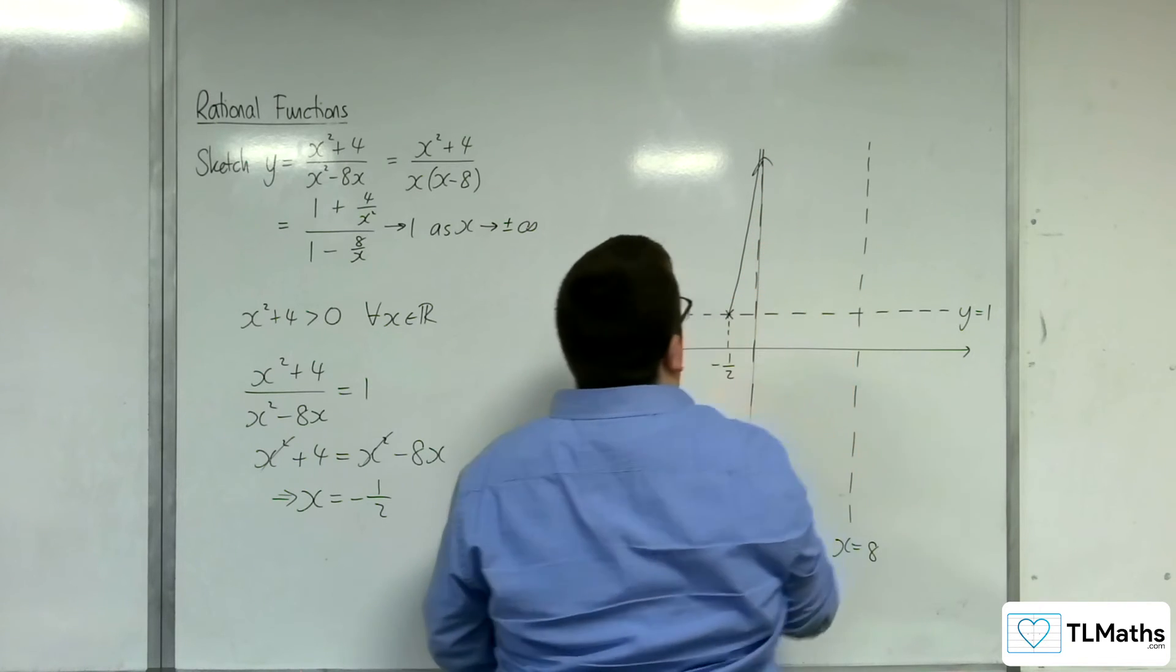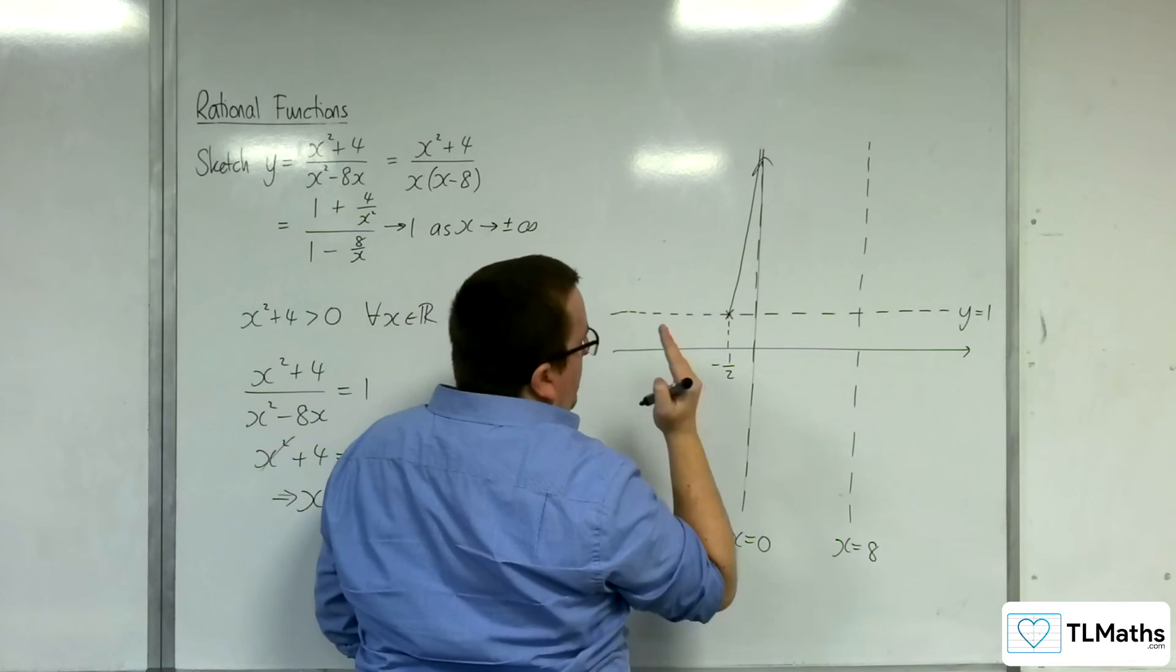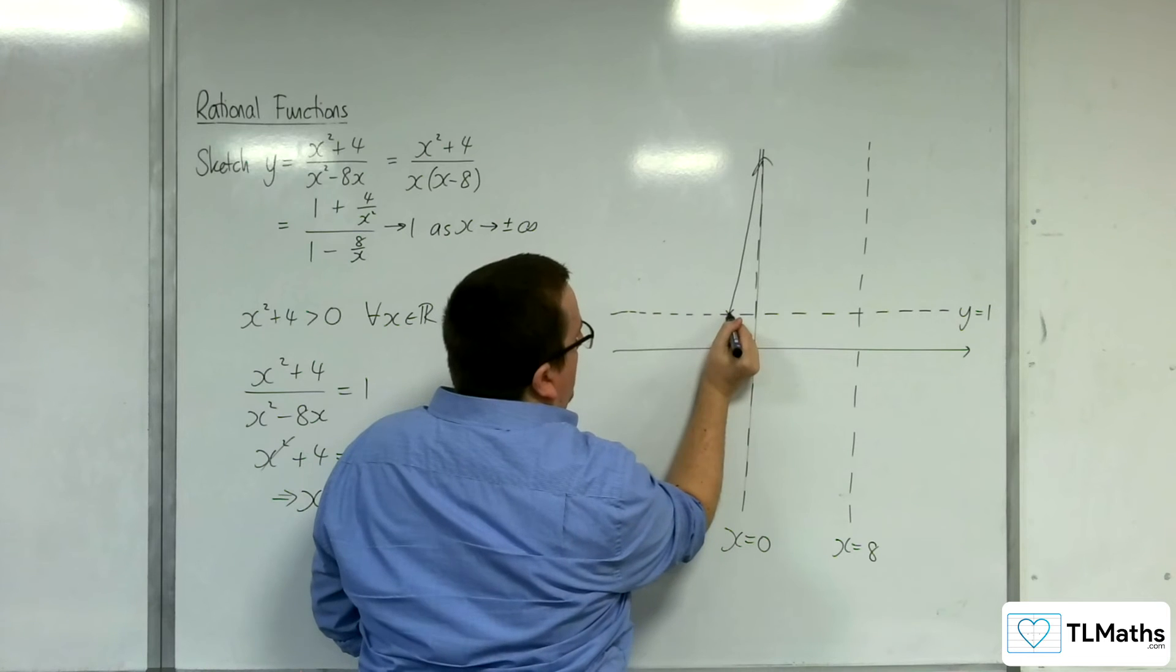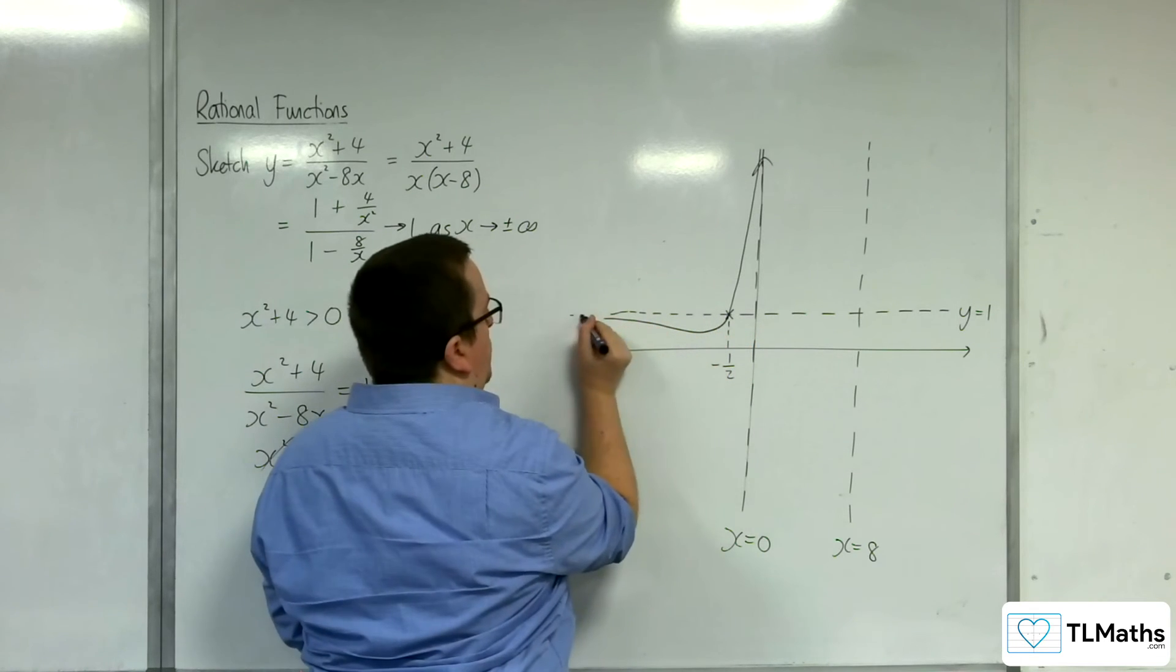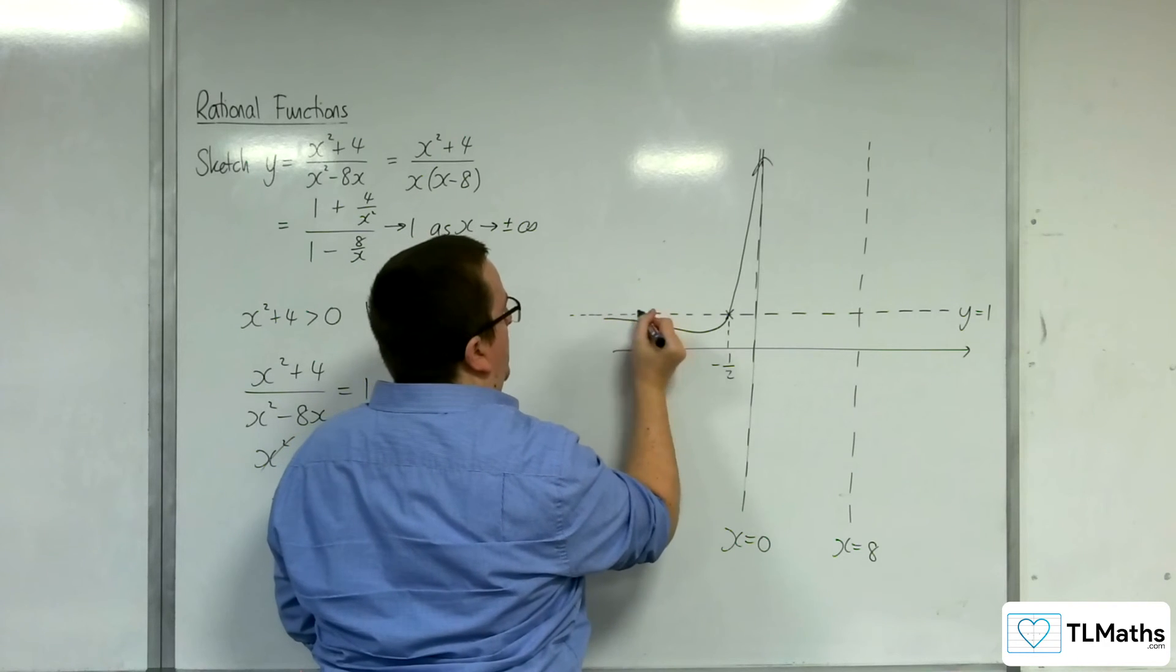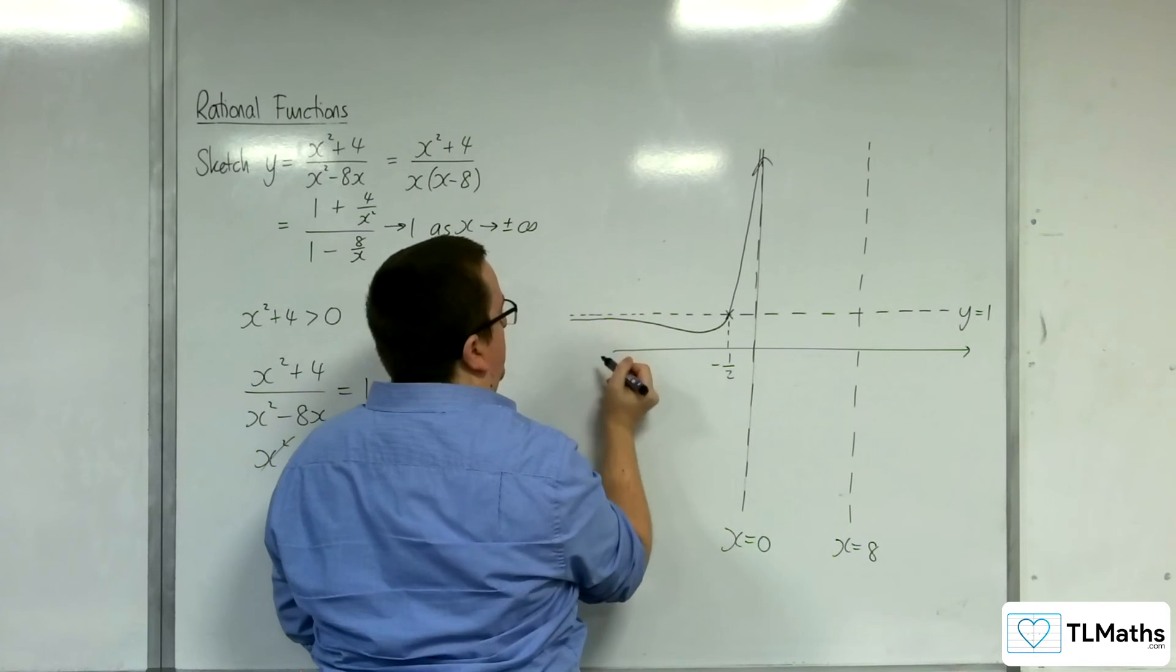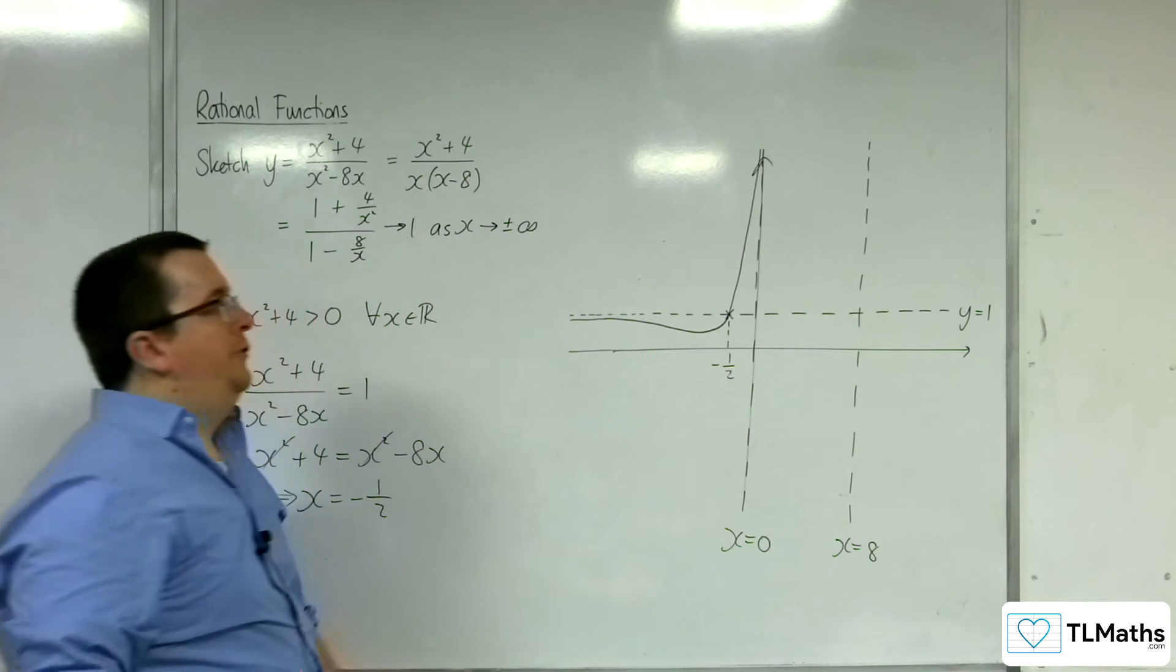We've got to go through that point at x = -1/2. But we've also got to tend to y = 1. And so it must come back on itself in order to tend towards that horizontal asymptote.